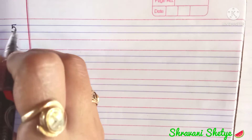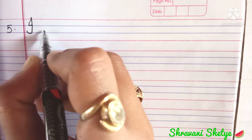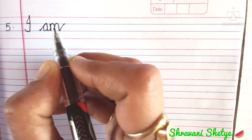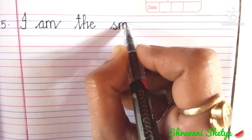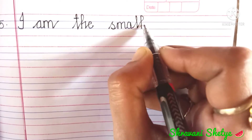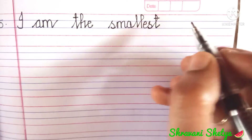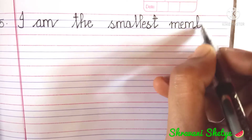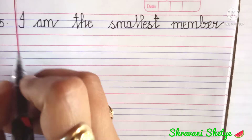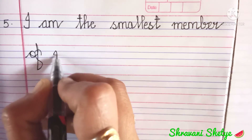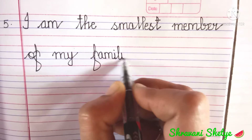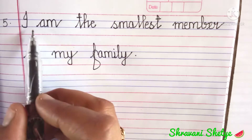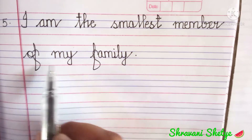Let us head further with point number 5. We write I-A-M, I am, T-H-E, the, S-M-A-L-L-E-S-T, smallest, M-E-M-B-E-R, member, O-F, of, M-Y, my, F-A-M-I-L-Y, family. I am the smallest member of my family.